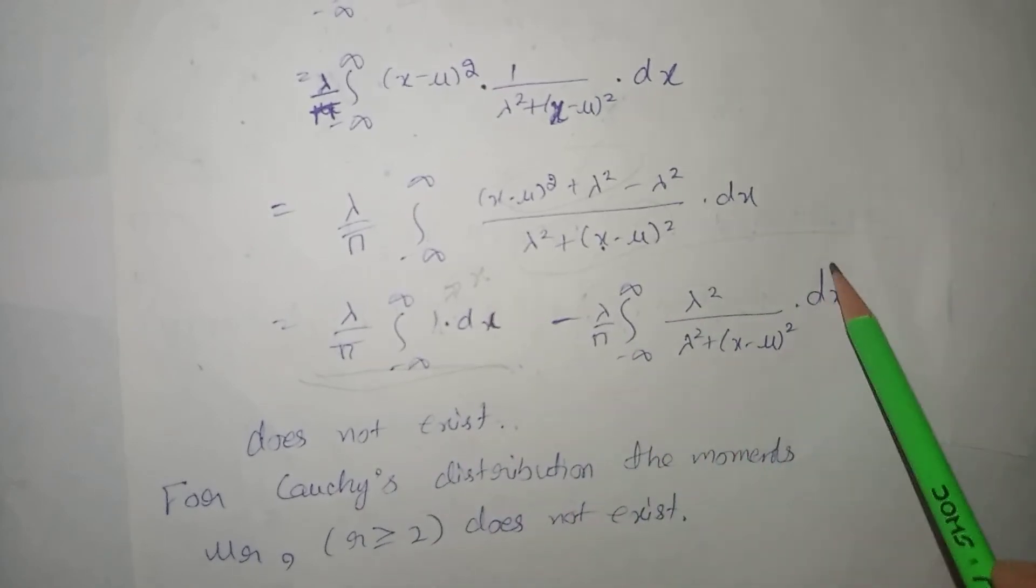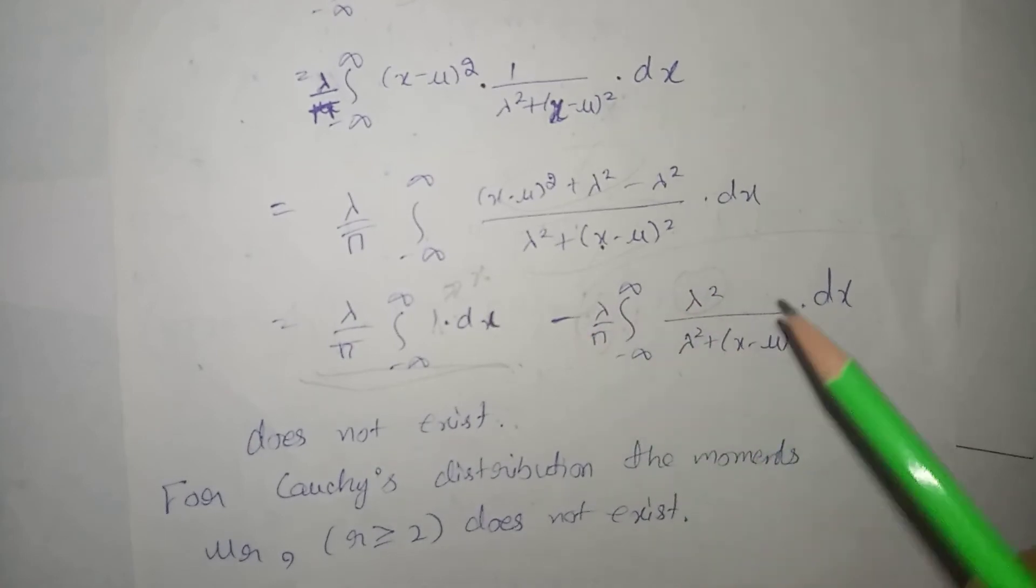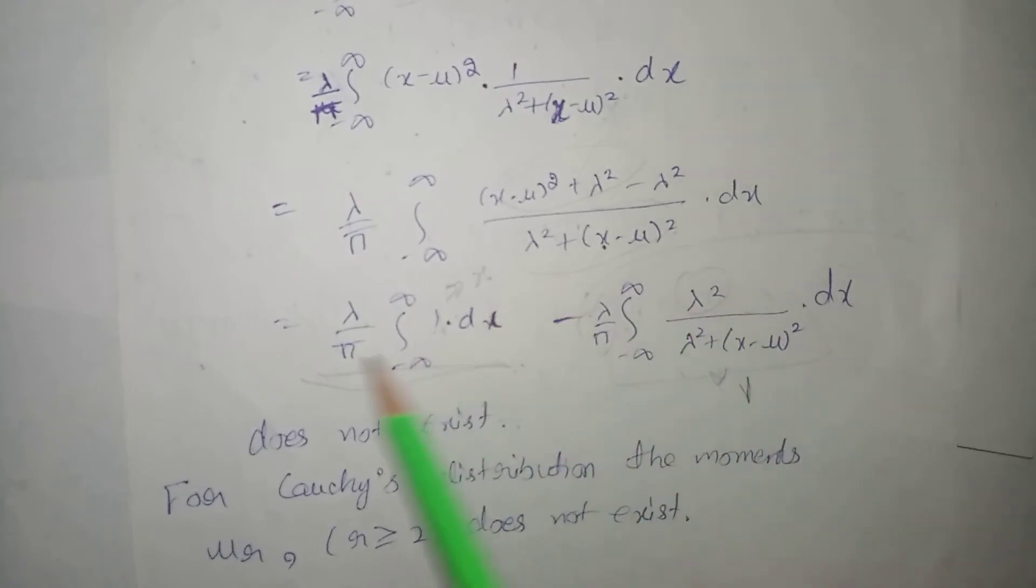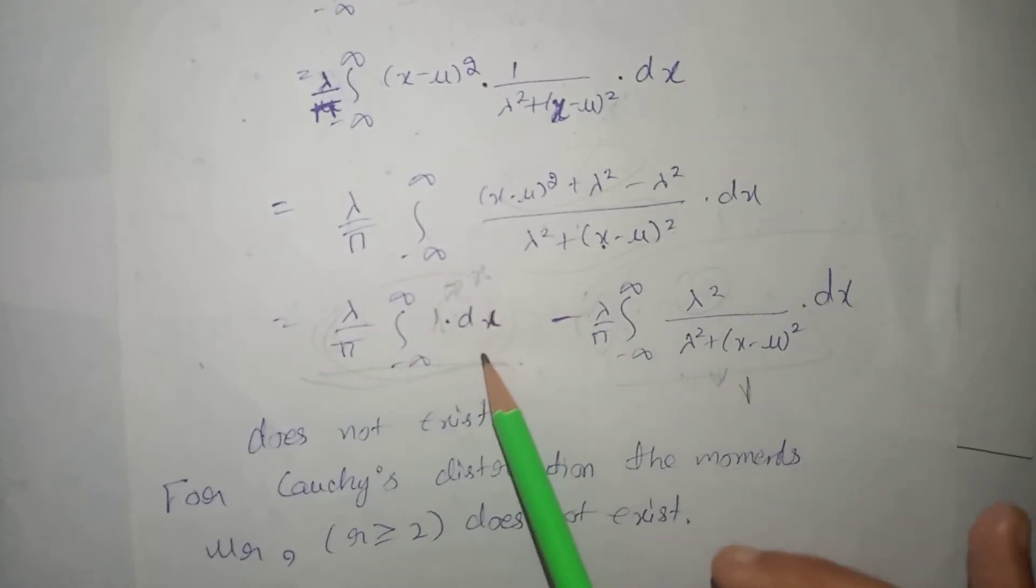Aur agar iski value ki taraf. Hum isko bahar nikaalengi. Isko andar rakhengi. Tho basically it is the pdf of the Cauchy distribution. So overall integral ki value. Humare paas one ban jayegi. But ya hamper yeh term toh humare infinity ban jayegi. That is. Does not exist. That is variance of Cauchy distribution. Does not exist.